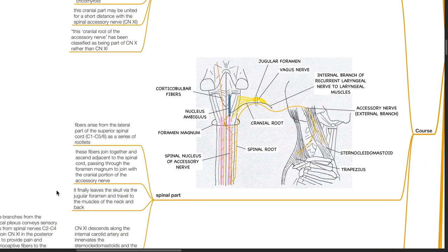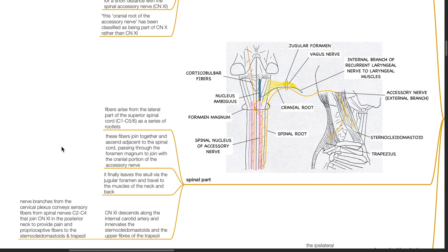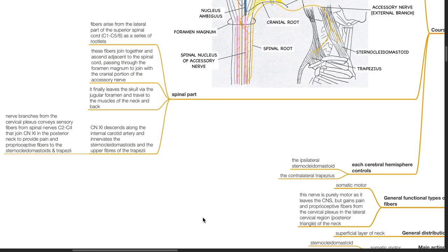The spinal part: fibers arise from the lateral part of the superior spinal cord, C1 to C5 or C6, as a series of rootlets. These fibers join together, ascend adjacent to the spinal cord, and pass through the foramen magnum to join with the cranial portion of the accessory nerve. It finally leaves the skull via the jugular foramen and travels to the muscles of the neck and back. Cranial nerve 11 descends along the internal carotid artery and innervates the sternocleidomastoid and the upper fibers of the trapezius. Nerve fibers from the cervical plexus convey sensory fibers from spinal nerves C2 to C4 that join cranial nerve 11 in the posterior neck to provide pain and proprioceptive fibers to the sternocleidomastoid and trapezius. Each cerebral hemisphere controls the ipsilateral sternocleidomastoid and the contralateral trapezius.